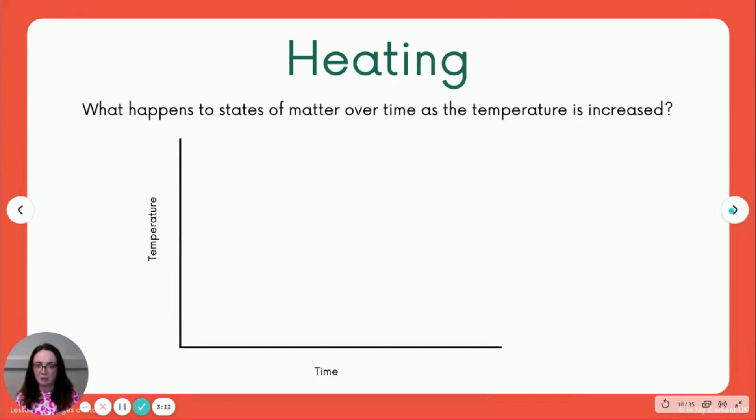Then there's two graphs you need to know: a heating graph and a cooling graph. So we'll look at heating first. Over time, we're going to heat this solid, and then what's going to happen to it is it's going to turn into a liquid. Once it turns into a liquid, it's going to be heated some more and it's going to become a gas.